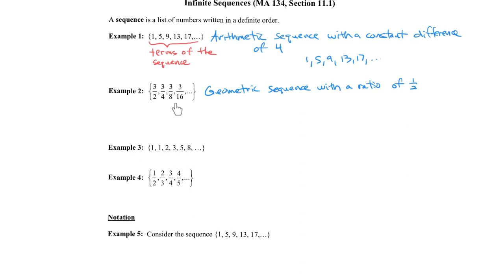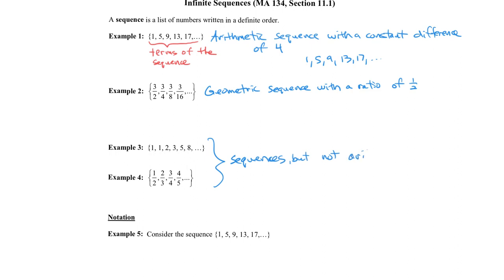When looking at terms of the sequence, we talk about the first term, second term, third term, and so forth. We also have a couple of other sequences here. These two don't fit as arithmetic or geometric sequences — they're still sequences, just not arithmetic or geometric.